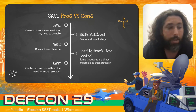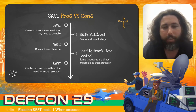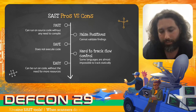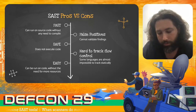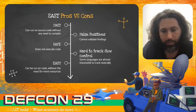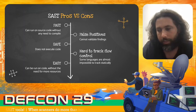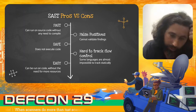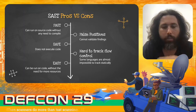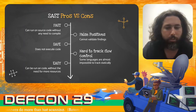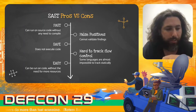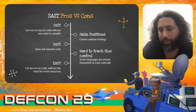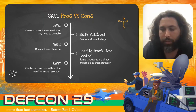The pros of SAST: it's very fast, much faster than DAST and other fuzzing solutions. It's safe — it doesn't execute any code. And it's easy — we run it on the codebase and usually don't need external resources. The cons: we have lots of false positives because SAST can only look at the code but doesn't know the logic or how it's used. It's also very hard to track flow control, so if you have complex flows, SAST becomes a nightmare.